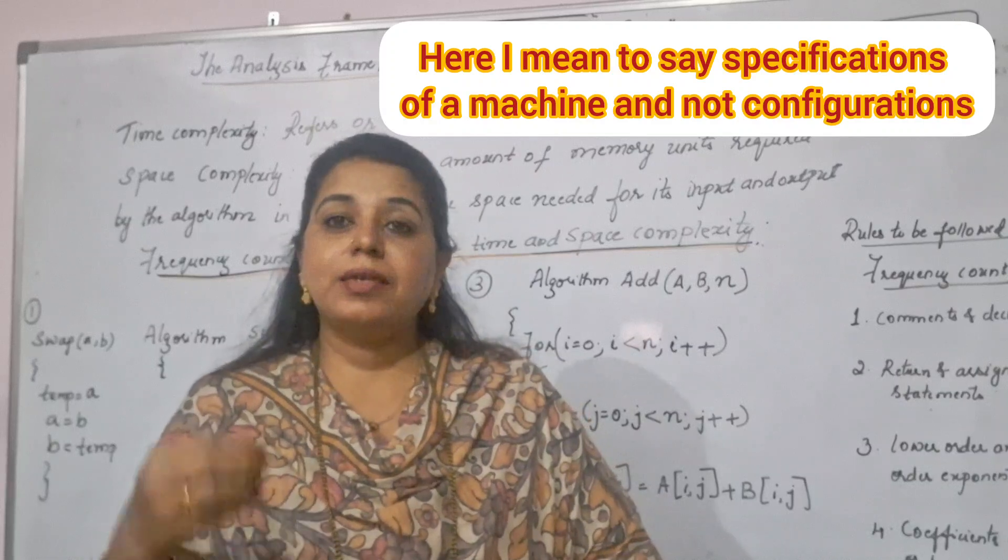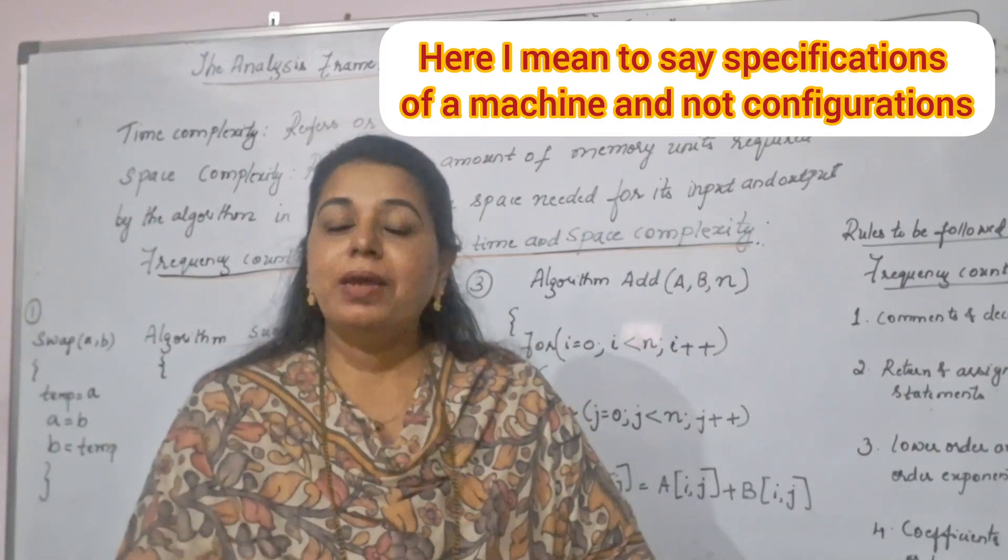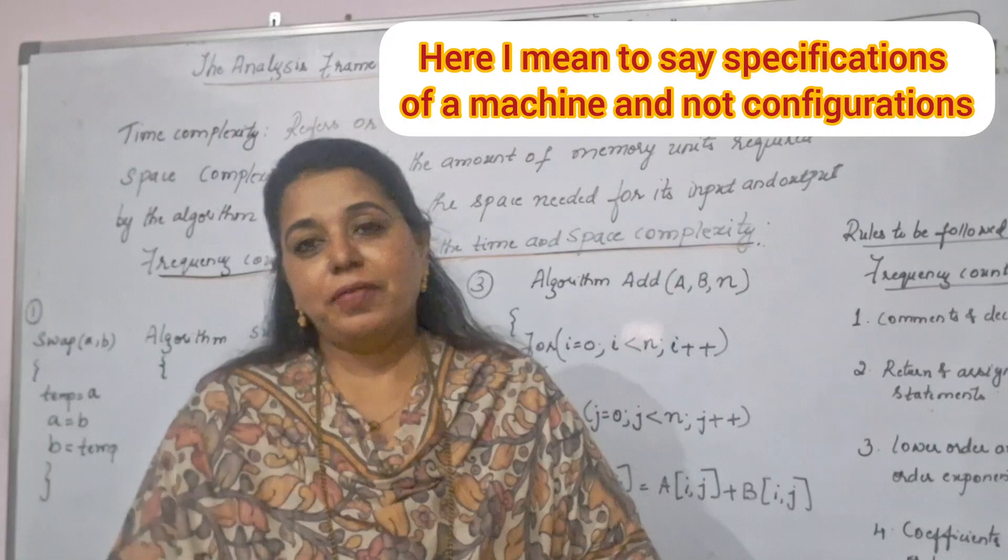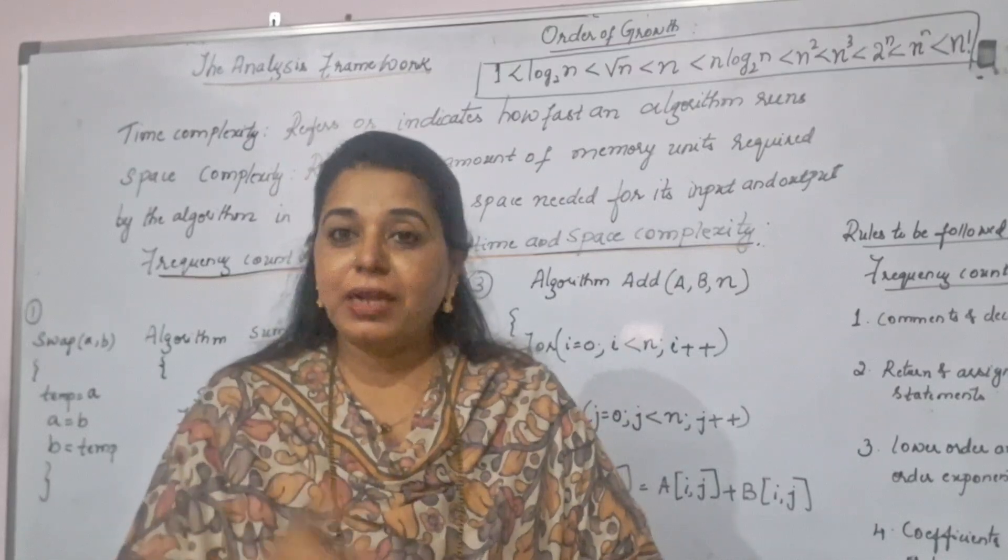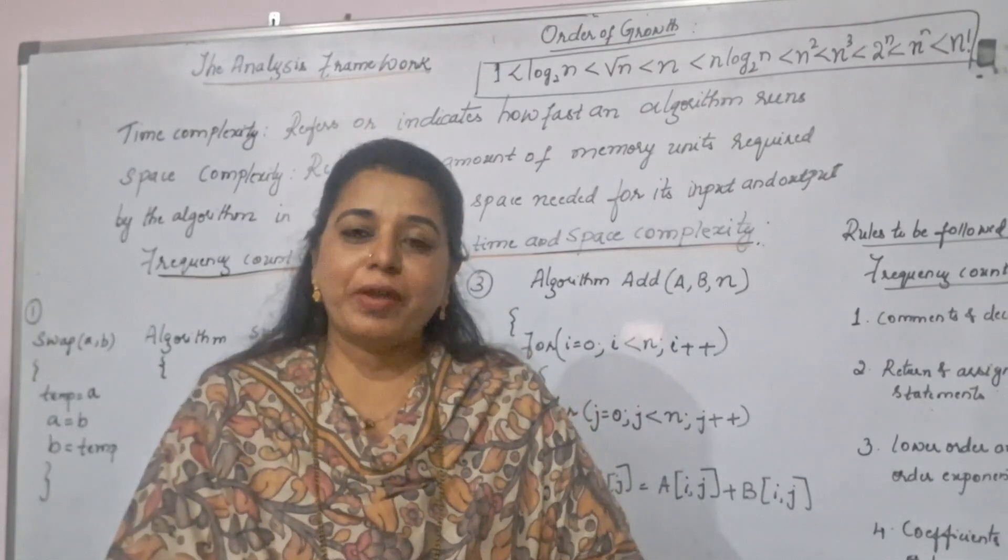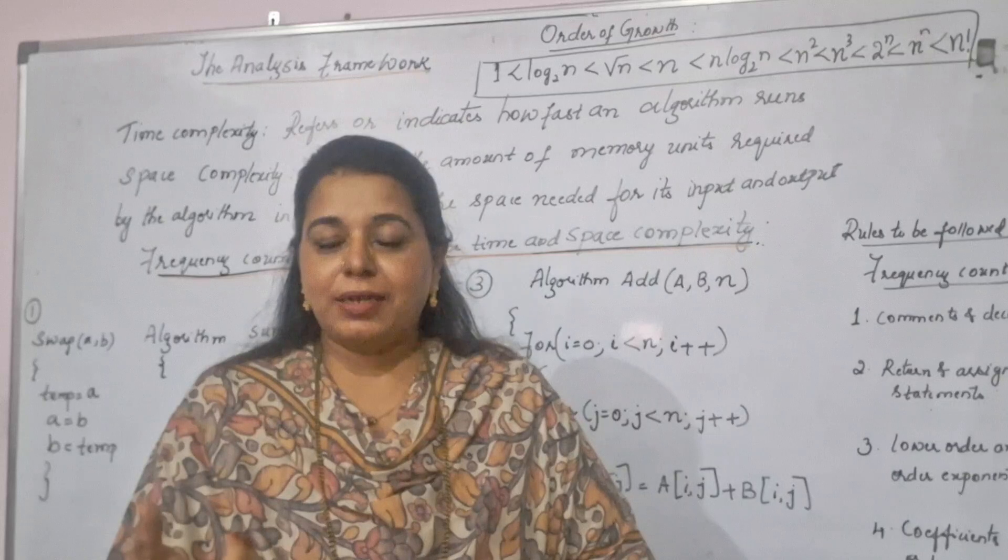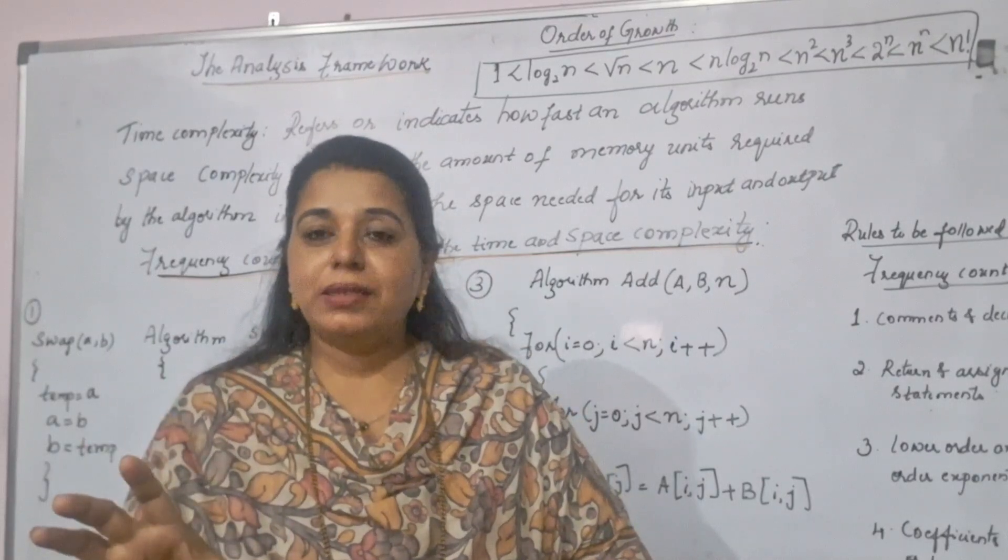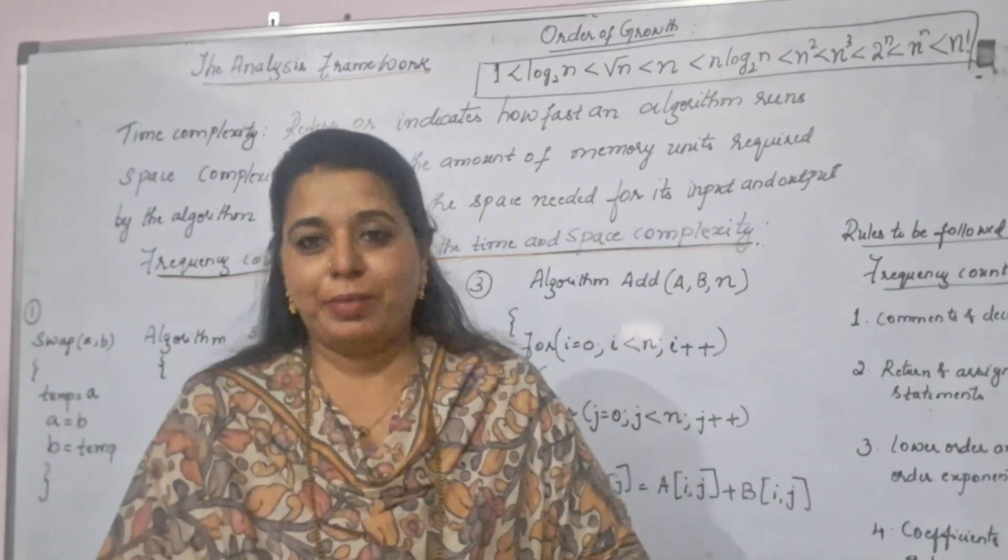Even sometimes, let us assume all configurations are also same. Steps are same, logic is same. Even then, if there is a variation in the running time of an algorithm, there can be one more factor. What is that factor? In your system, whatever algorithm you are executing, that is the only algorithm present. And CPU is concentrating only to that algorithm and it executes immediately.